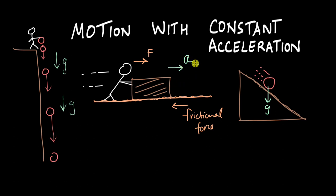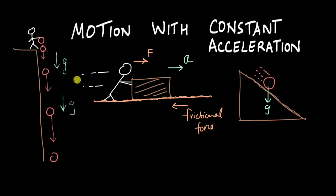In all three cases the acceleration is constant, and that's why we study motion with constant acceleration — not just motion with constant velocity. Whether it's free fall, a ball rolling down an inclined plane, or someone pushing a box on a rough surface with constantly increasing speed, the only thing that remains constant is the acceleration.